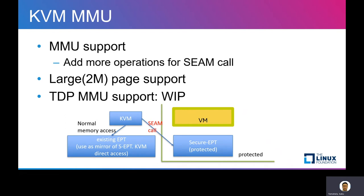Let's move on to KVM MMU. The operation is a bit tricky. In TDX, EPT is also protected — it's called Secure EPT. KVM cannot directly access Secure EPT; it has to use a SEAMCALL to operate on Secure EPT, which costs many CPU cycles. So for performance, we keep the existing conventional EPT as a mirror of Secure EPT, so that the current EPT code can be reused. But the CPU doesn't look into the conventional EPT — it uses the Secure EPT.